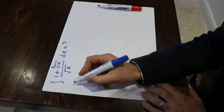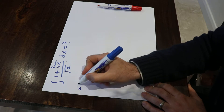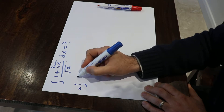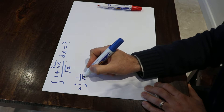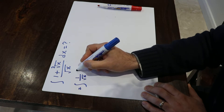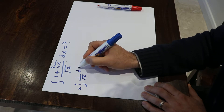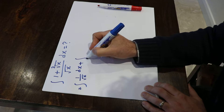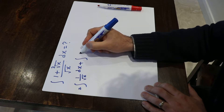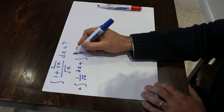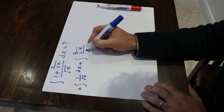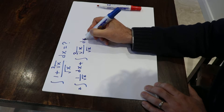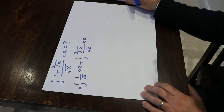I can write this integral as the integral of 1 over the square root of x dx, plus the integral of the 3rd root of x over the square root of x dx.